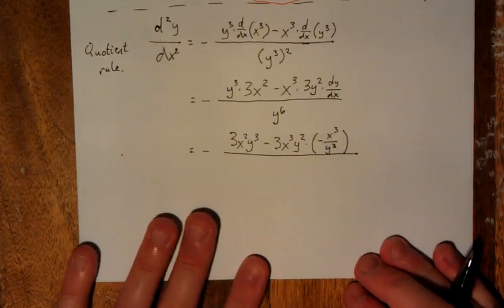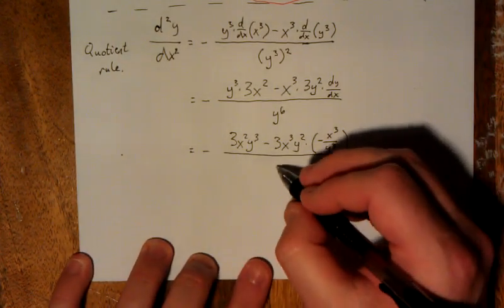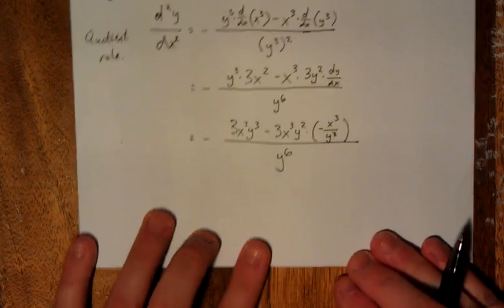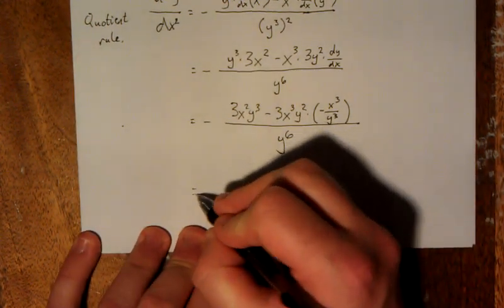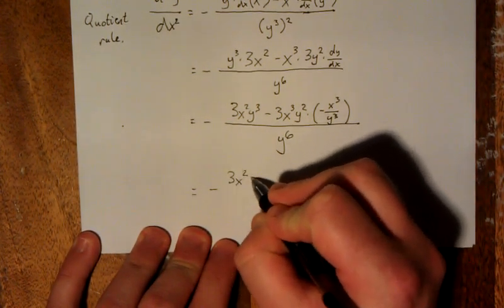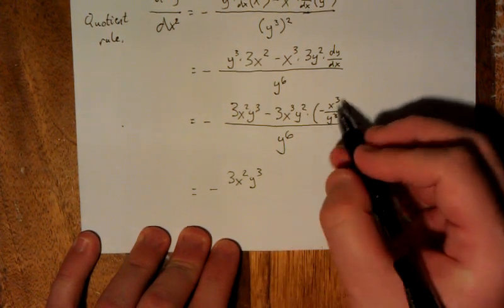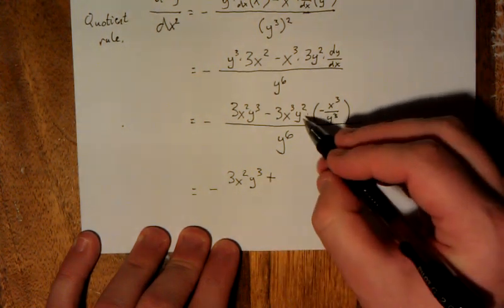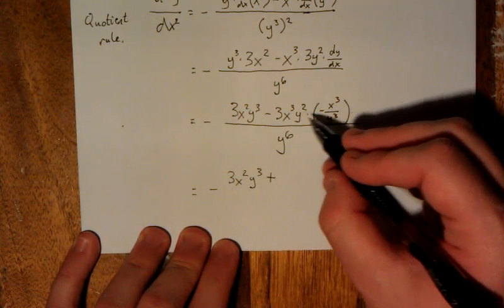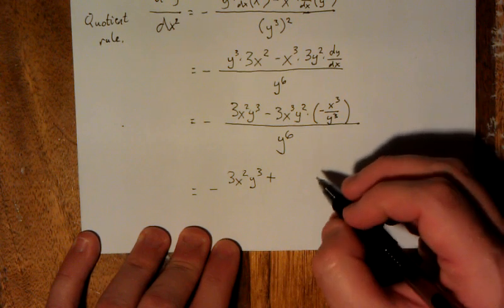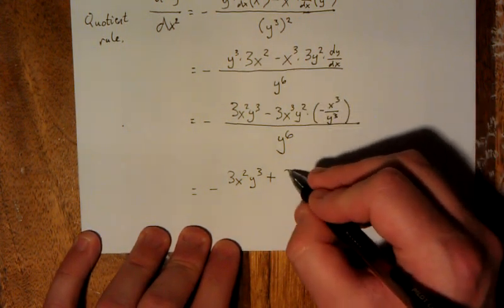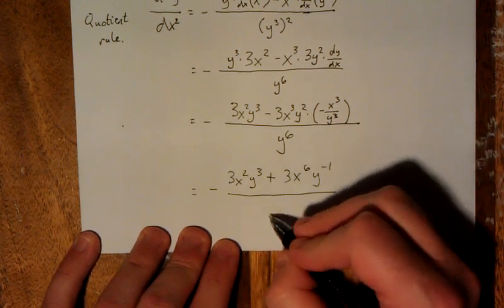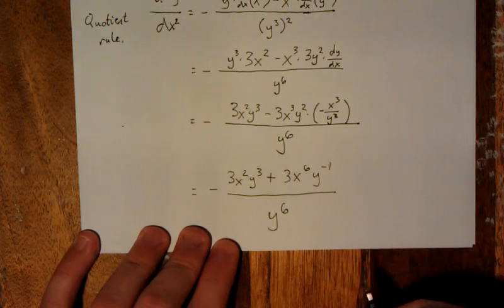Yo dog, I heard you like fractions. Now you've got fractions inside of your fractions. So how are we going to deal with the fact that we now have a y cubed inside the denominator of the numerator? Well, the first thing we can do, 3x squared y cubed. All right, so I'm going to take this minus sign, combine it with this minus sign, and now we've got a plus. I'm going to cancel out two of the factors of y with two of the factors of y, and take that x cubed out front. So this will be 3x to the sixth, and we can call that y to the minus one, all over still got y to the sixth.